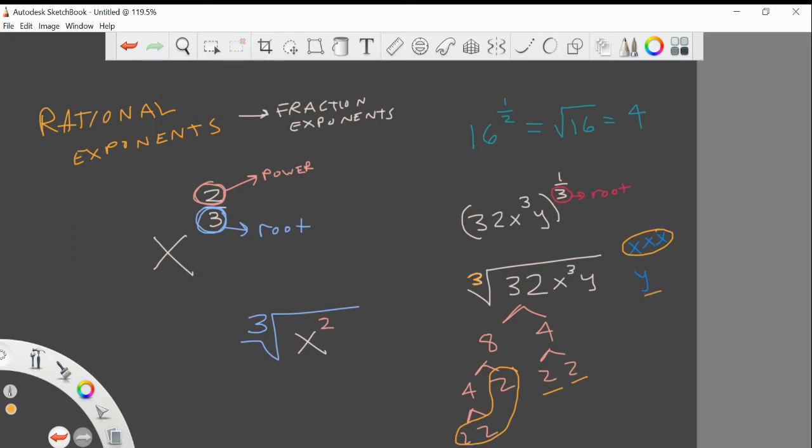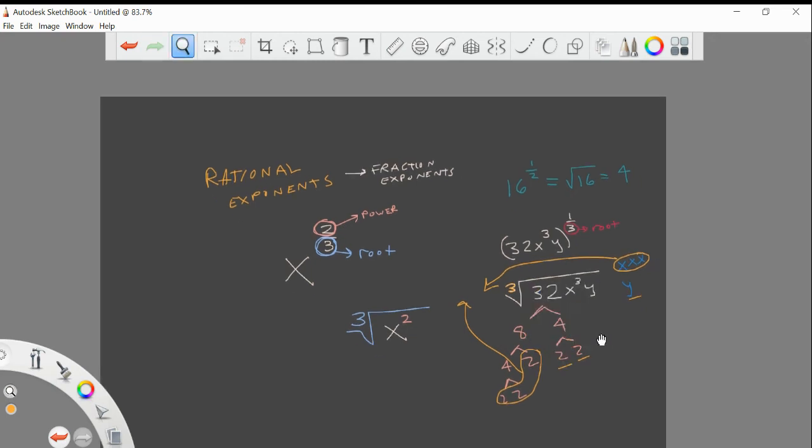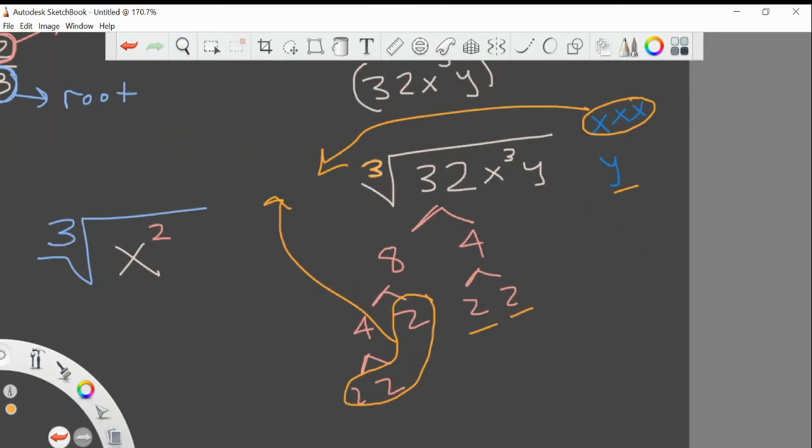So now sorting this out, what comes out front? 2 comes out front, circled x comes out front. So we should have, our answer would be 2 on the outside, x on the outside, cube root, left over 2, left over 2, always multiply them. That's a 4. And then y, that's a y. This would be the answer.